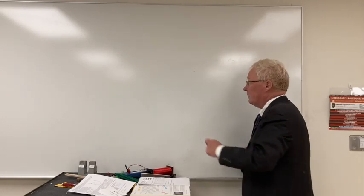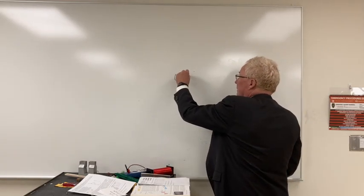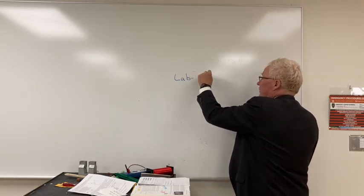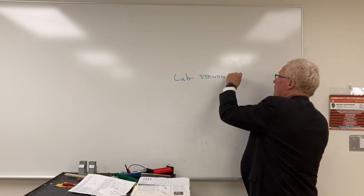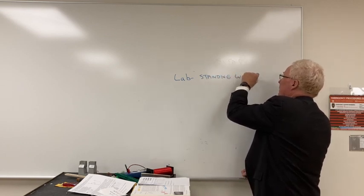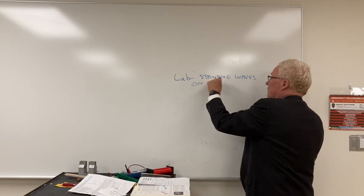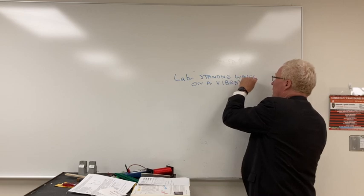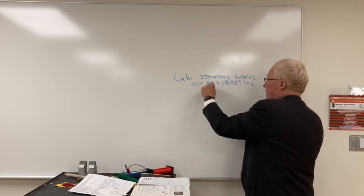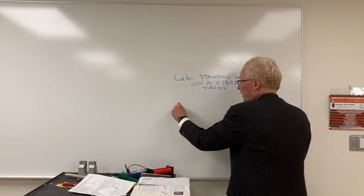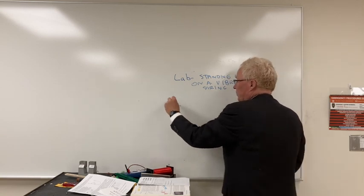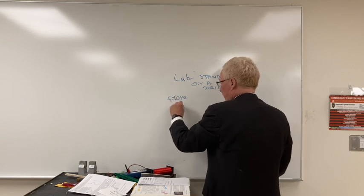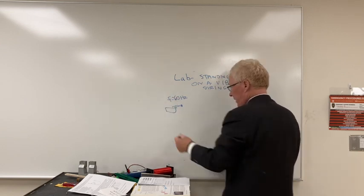Okay, this is Lab 8 for science, and this is standing waves on a vibrating string. The way it works is we're going to have a vibrator which goes at a frequency of 60 hertz based on household current, so it'll vibrate up and down and be attached to a table.